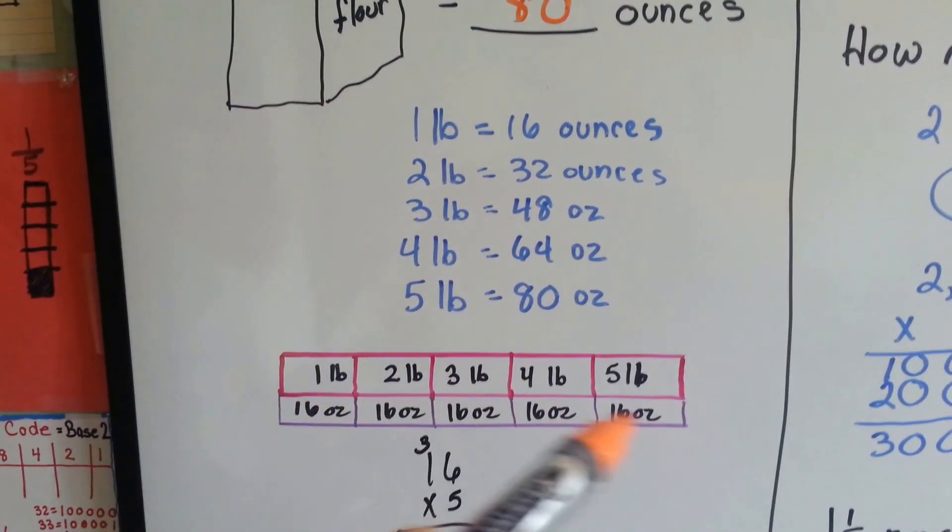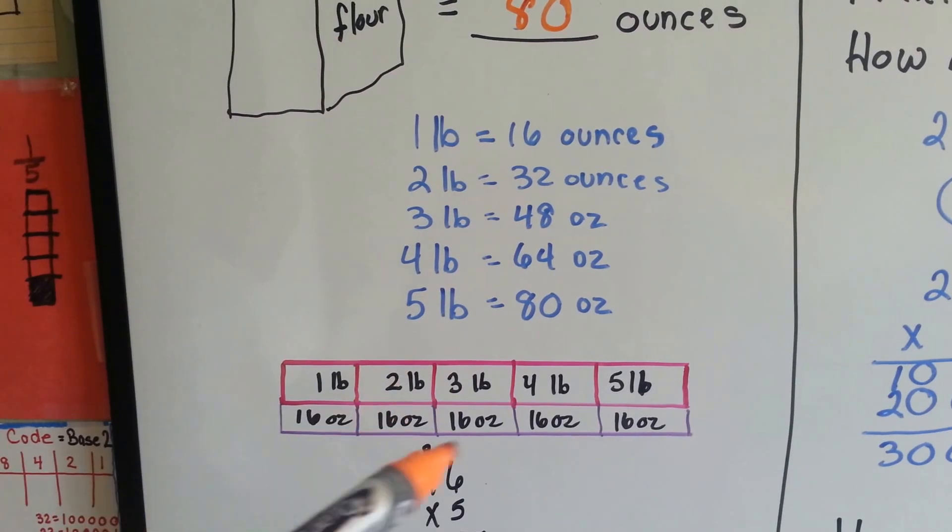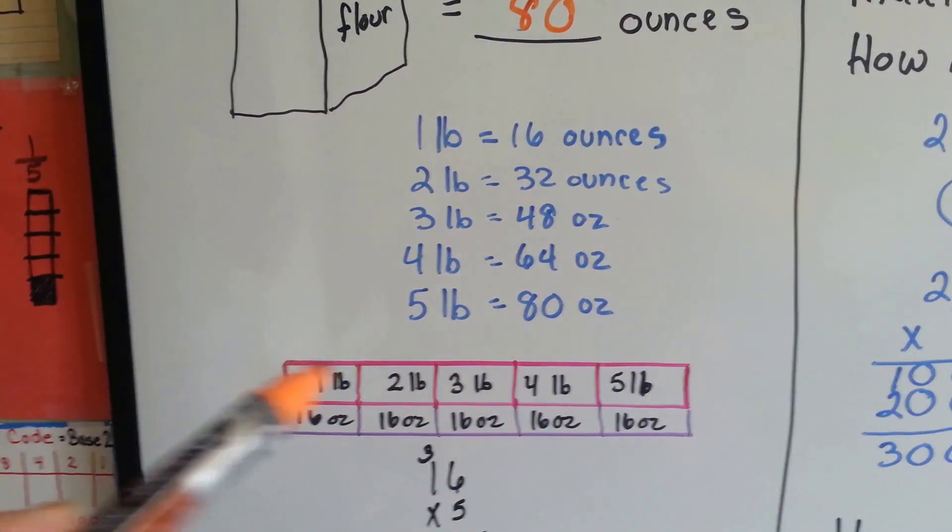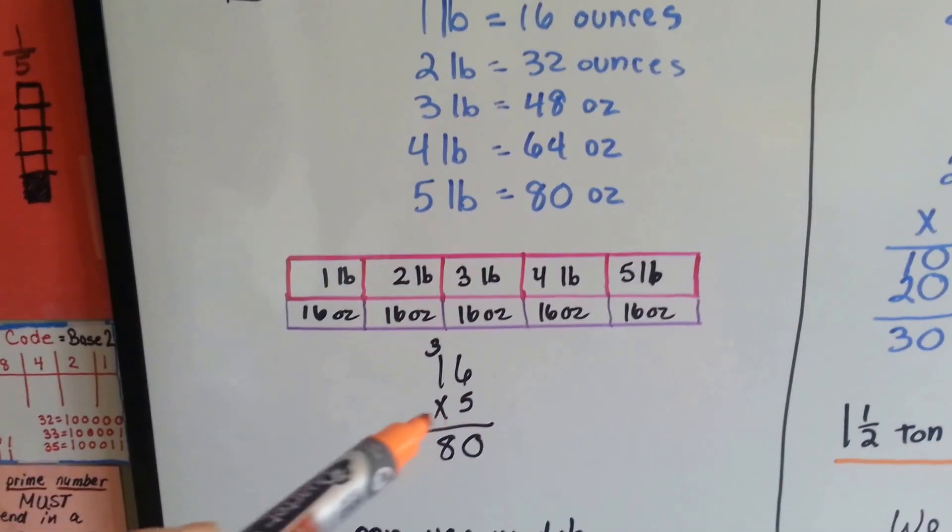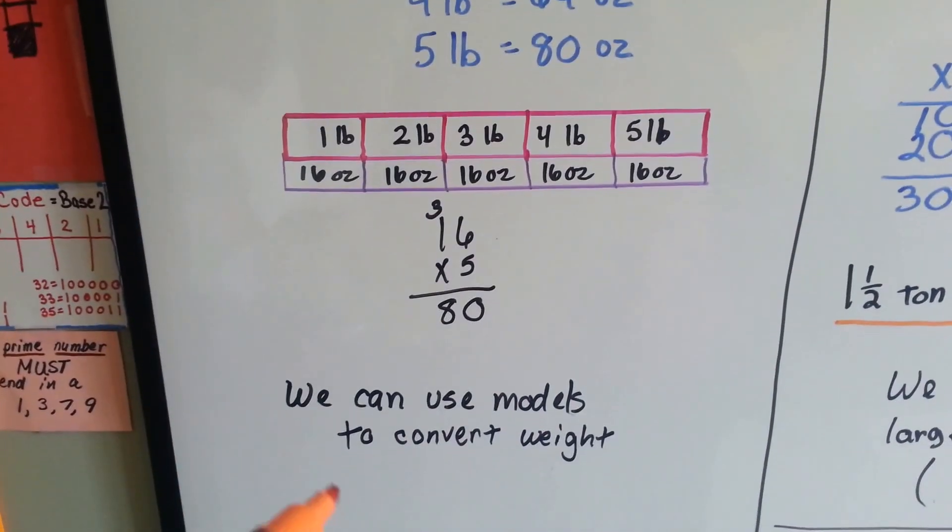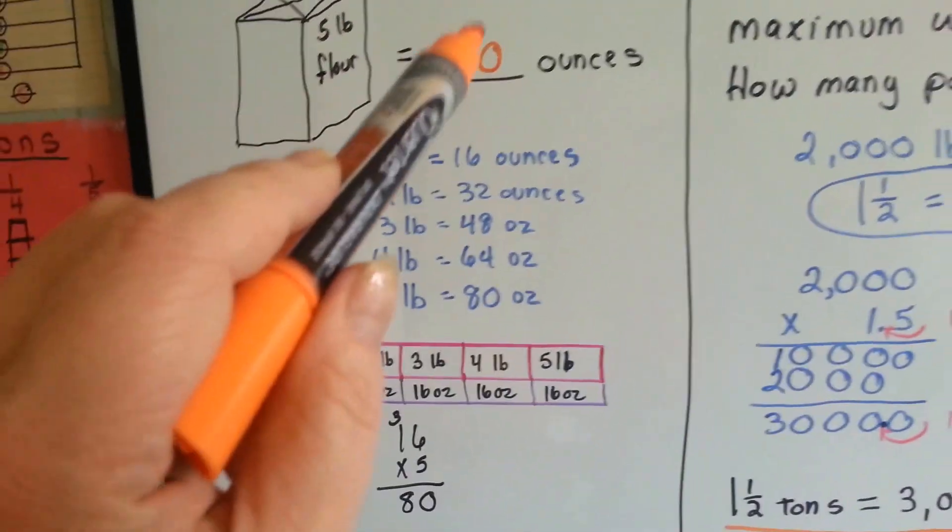We could also use a model so that we have 1 pound for each 16 ounces to see how much it would be, and then we could multiply the 16 times 5 to get 80. Either way, we'll get our 80 ounces.